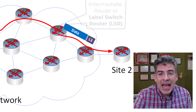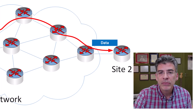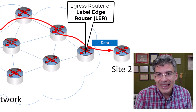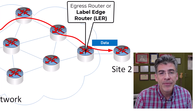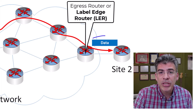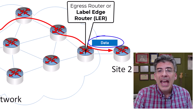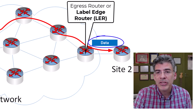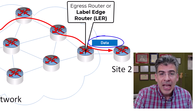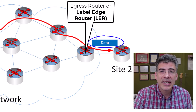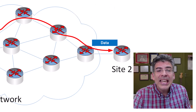Eventually, the packet reaches the egress router, which is another LER, at the edge of the MPLS domain. Here, the MPLS label is removed, and the packet is then forwarded based on its original IP header and delivered to its final destination. The key here is that the labels simplify the forwarding process by reducing the need for complex IP header lookups at each hop.